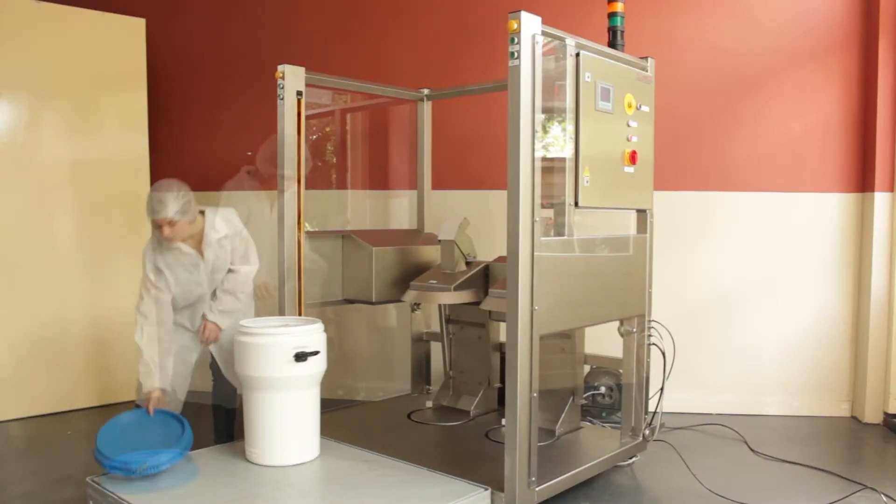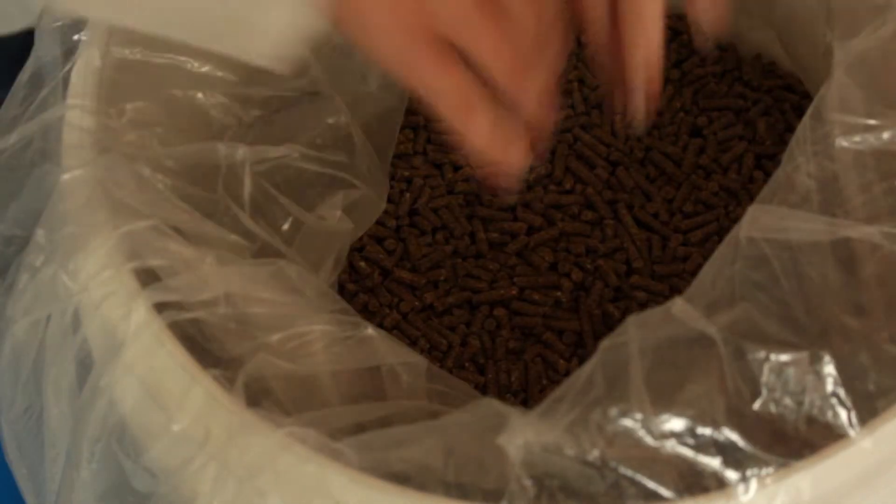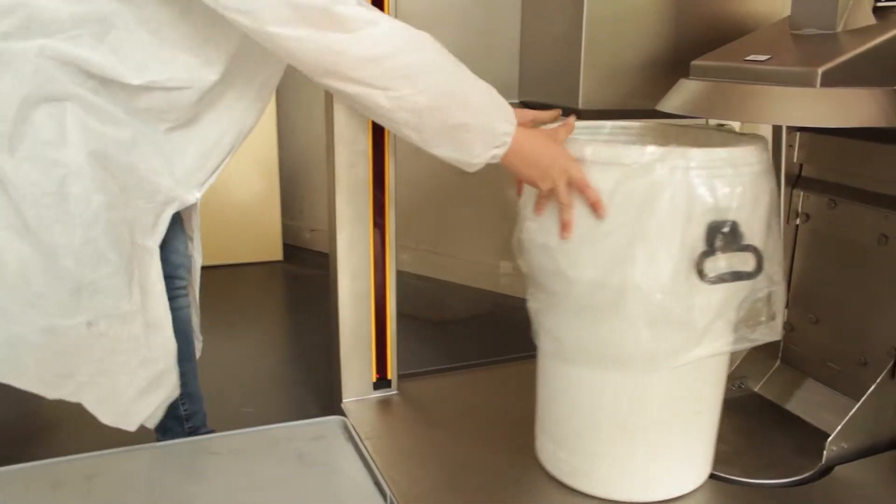Place a pallet with closed drums in front of the tipper, prepare a drum and slide it onto the tipper.